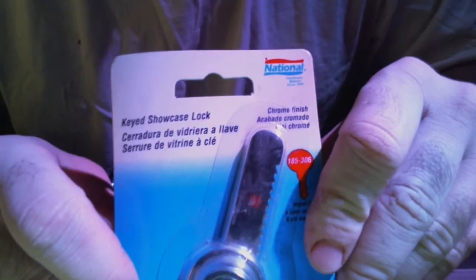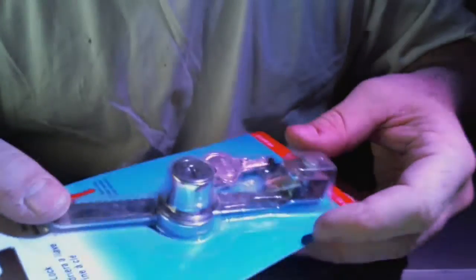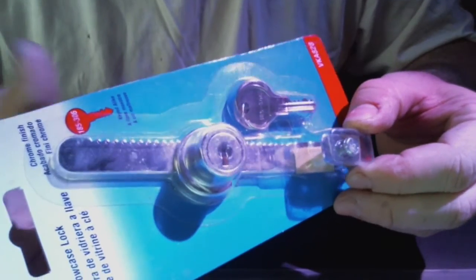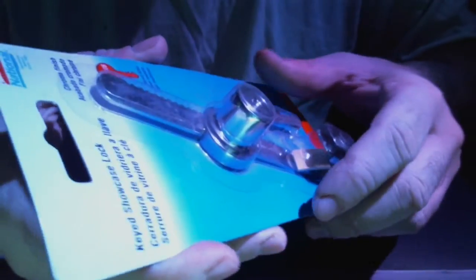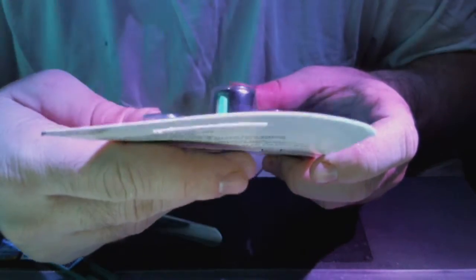It's a glass showcase or glass case lock. You see them in some places with sliding doors for the glass case. They use them to lock them up. This one here is made by National, and I'm going to show you today how quickly you can pick these locks.